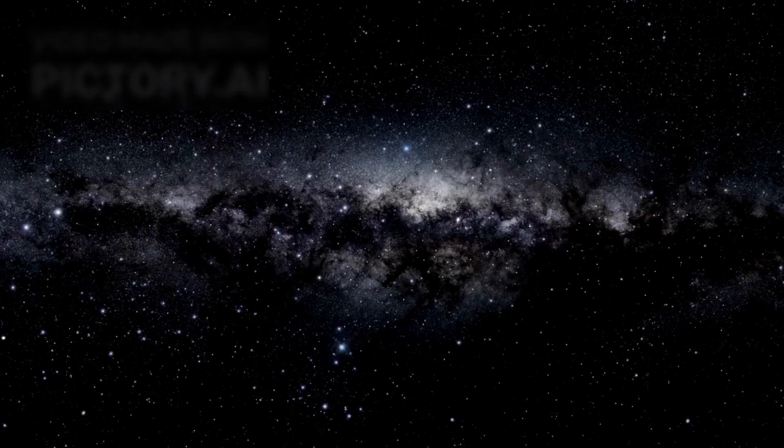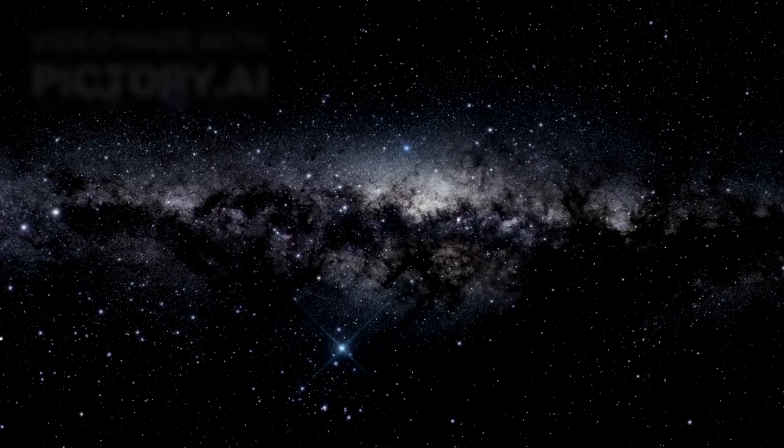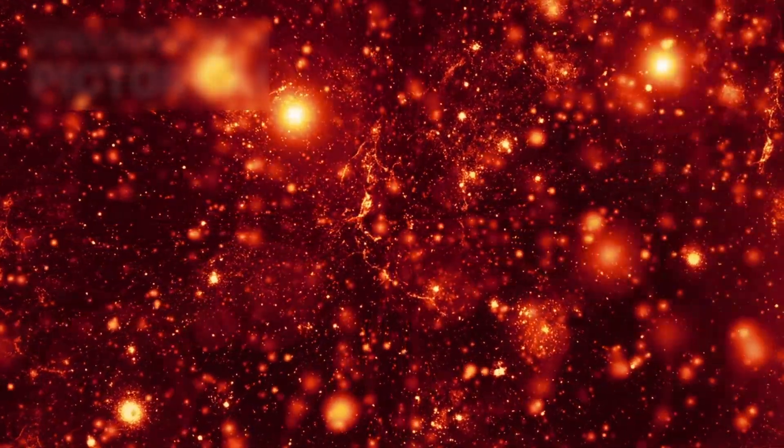Betelgeuse is also racing through space, traveling at 30 kilometers per second. It was likely ejected from its birthplace in the Orion OB1 stellar group, which also includes the stars in Orion's belt. This movement creates a bow shock, a wave of gas and energy that stretches over four light years ahead of the star.